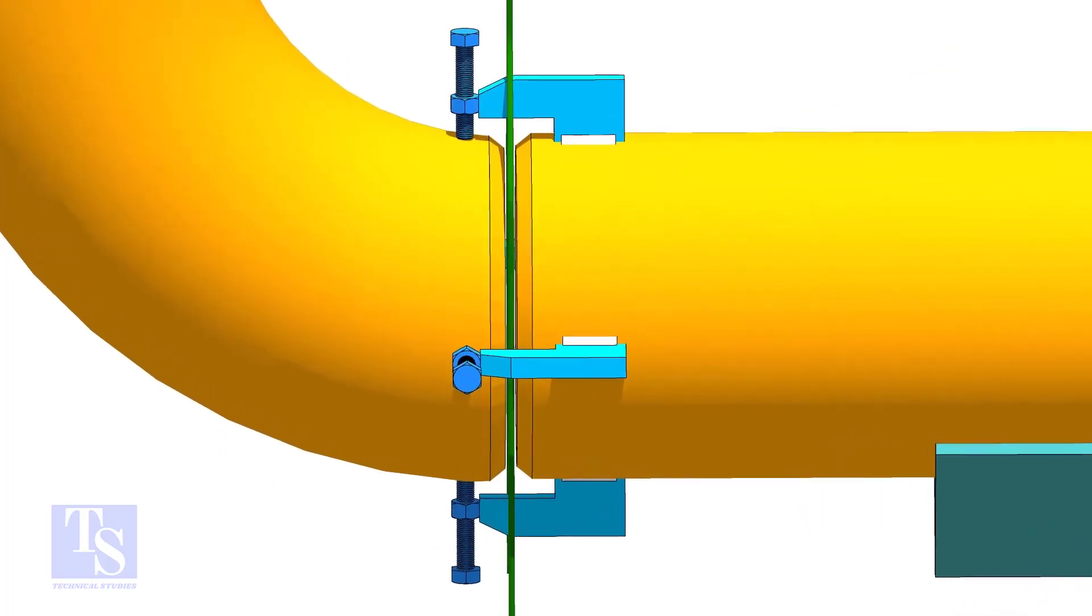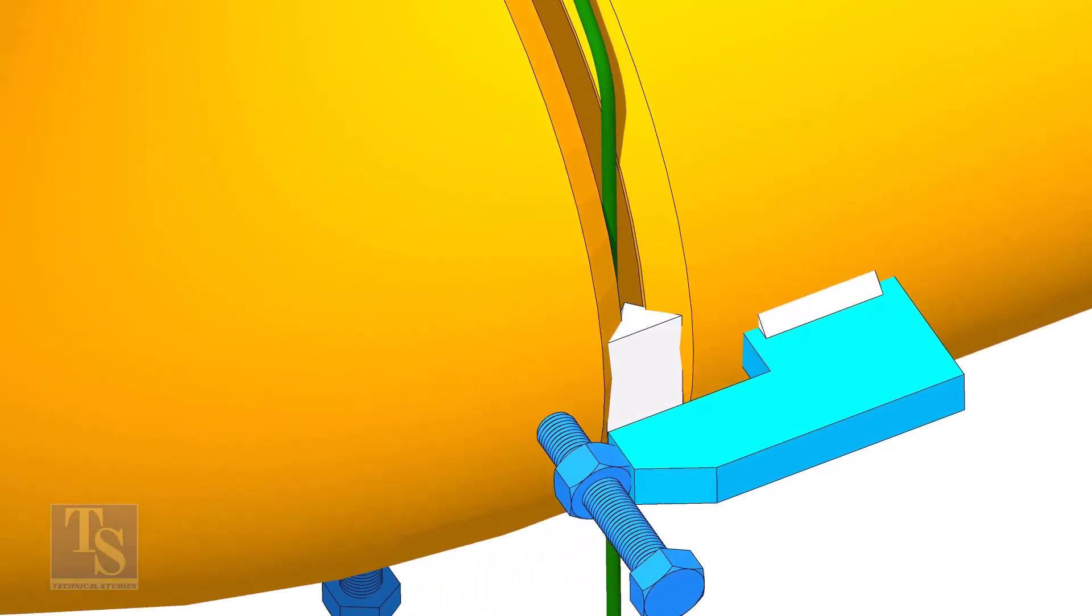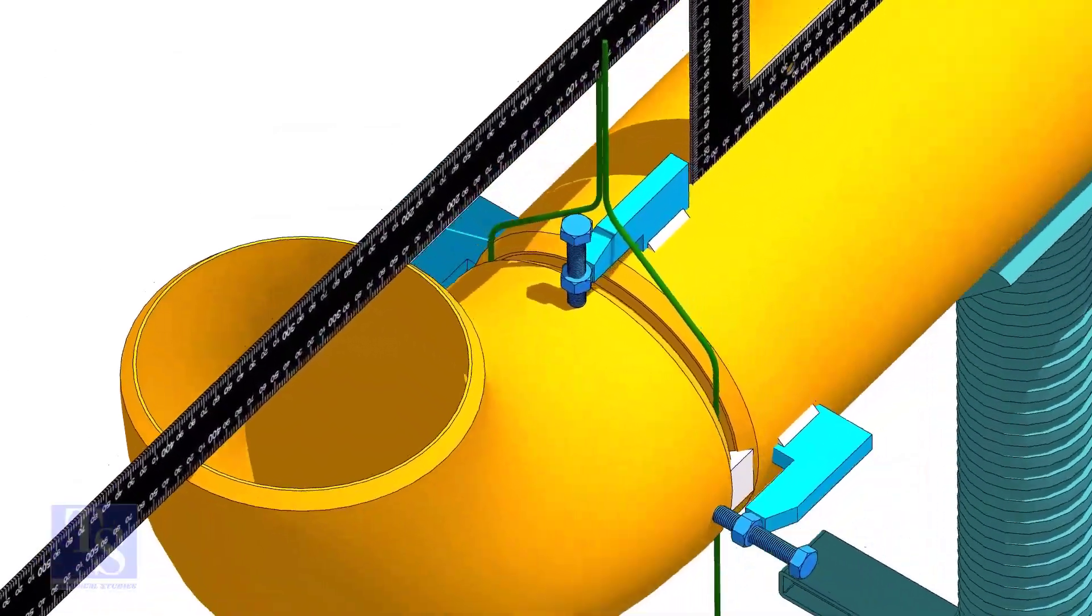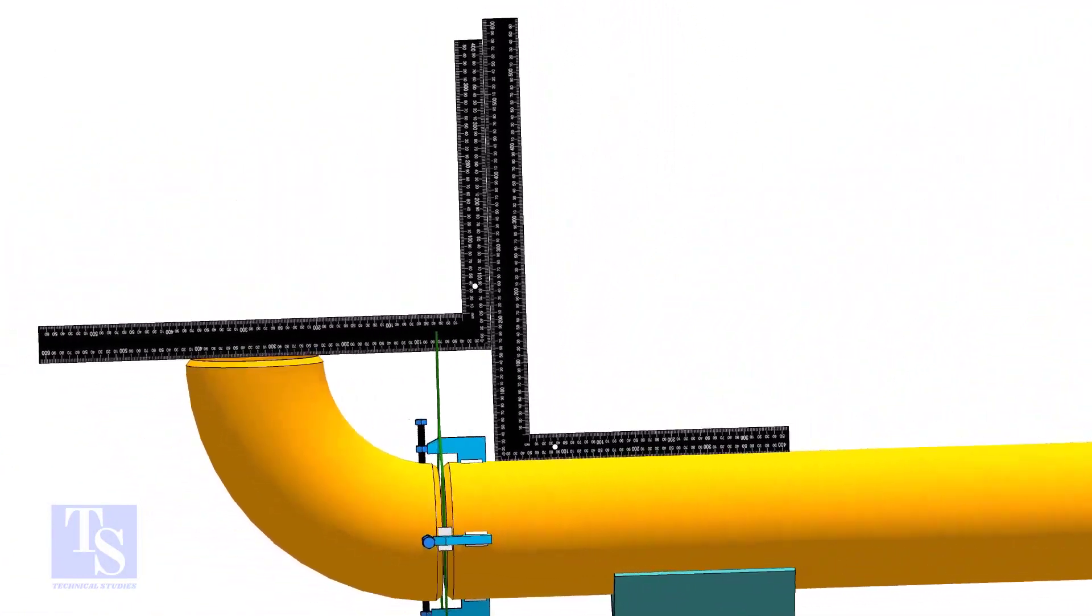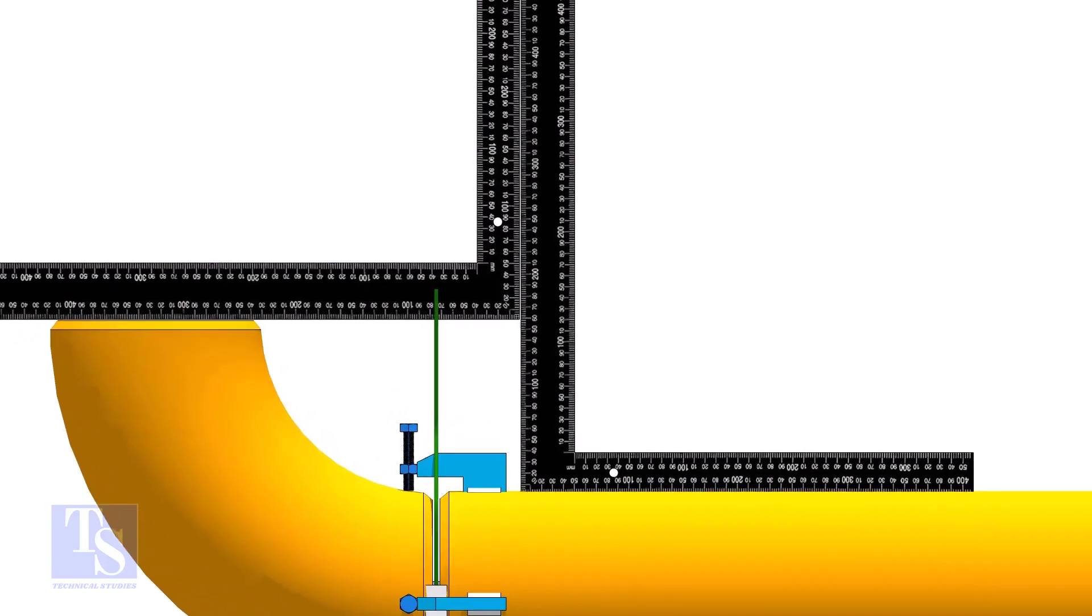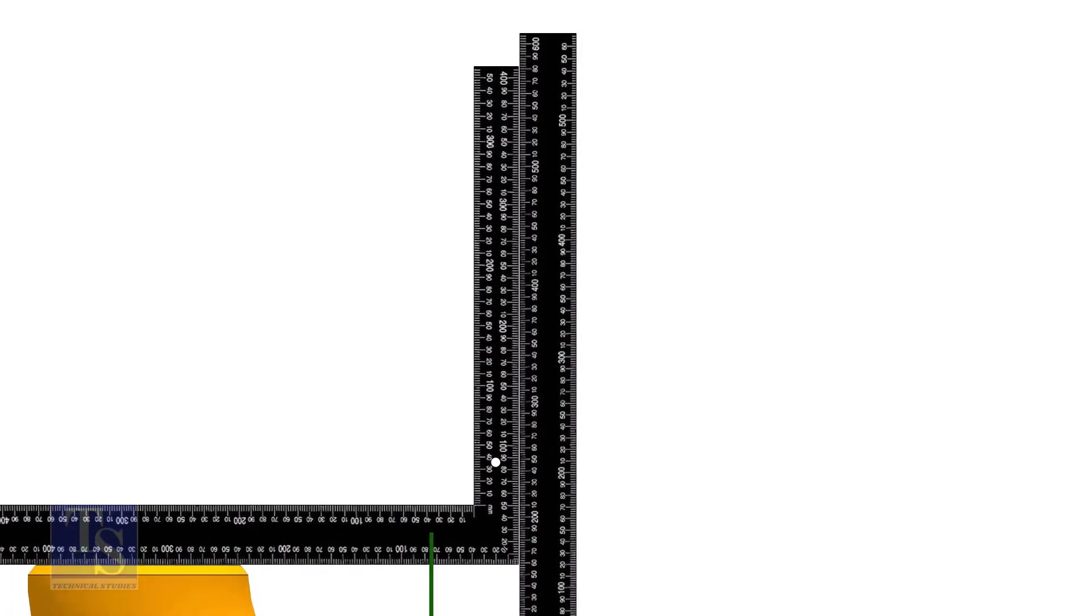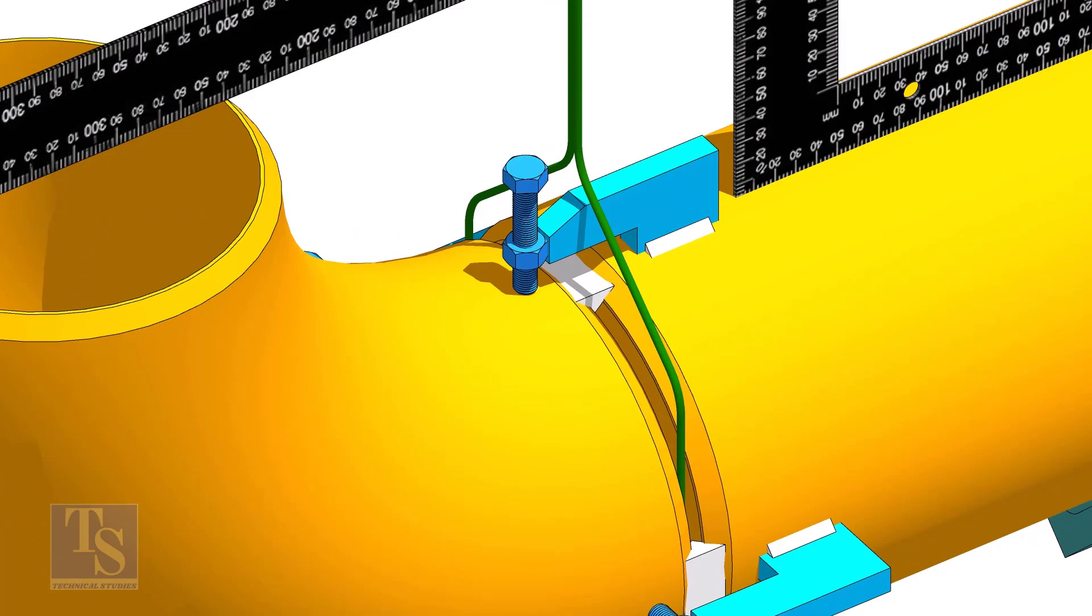Next method is aligning the elbow and the pipe with two right angles. After tacking at both sides of the joint, hold a right angle on the elbow face and one on the pipe as shown. Rotate the elbow as required to make the right angle edges parallel. Tack weld in the top and bottom side of the joint.